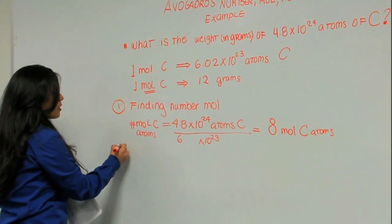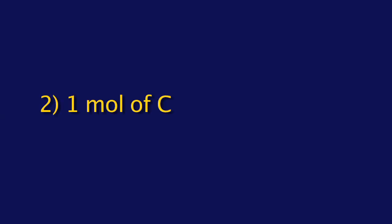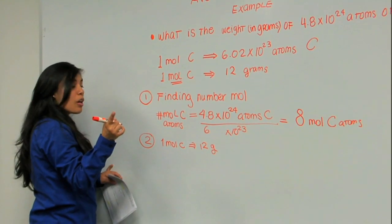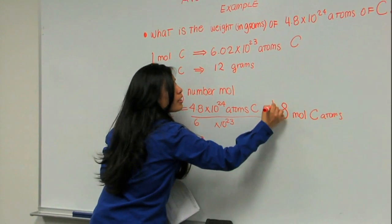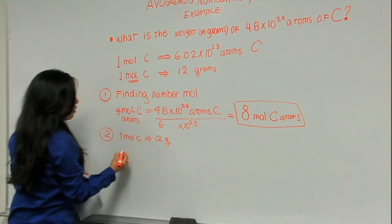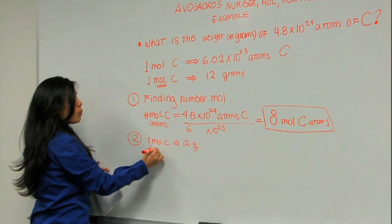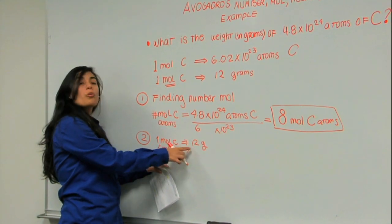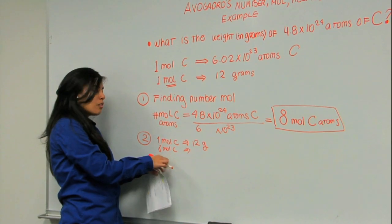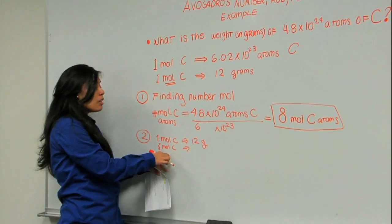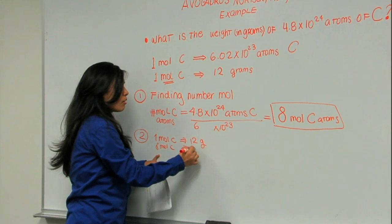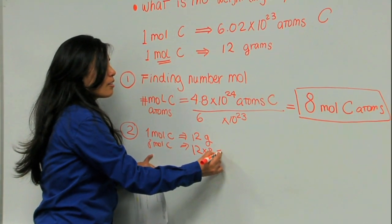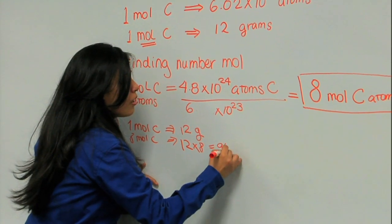Second, we know that 1 mole of carbon weighs 12 grams. But we don't have 1 mole — we have 8 moles of carbon. So what would that weight be? Very easy. If 1 mole weighs 12 and I have 8, I have to multiply: 12 times 8, and that's 96 grams.